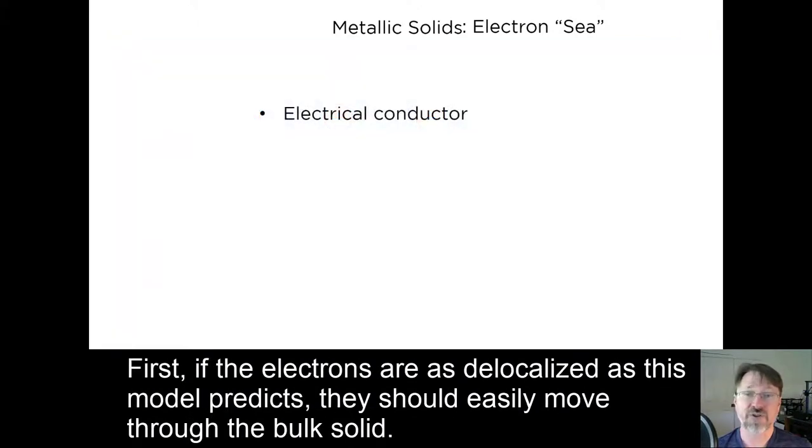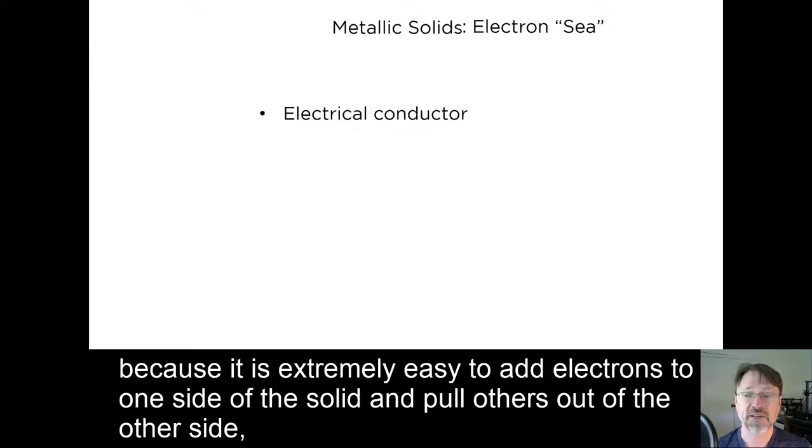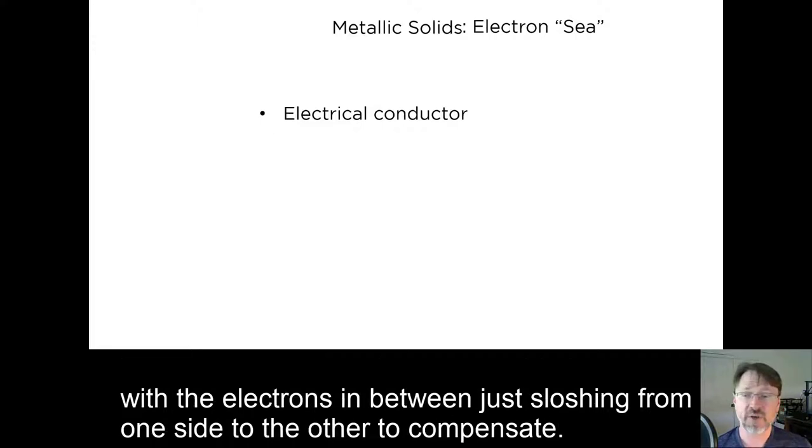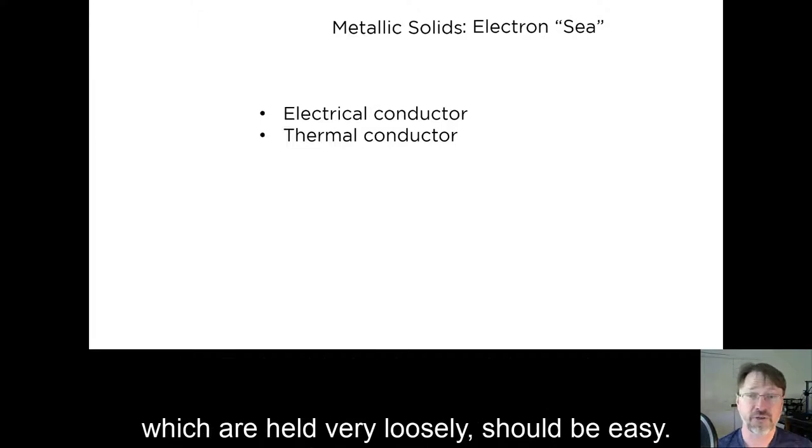First, if the electrons are as delocalized as this model predicts, they should easily move through the bulk solid. That makes metals electrical conductors, because it is extremely easy to add electrons to one side of the solid and to pull others out of the other side, with the electrons in between just sloshing from one side to the other to compensate. Metals should also be good thermal conductors, because adding or removing kinetic energy to the electrons, which are held very loosely, should be easy.